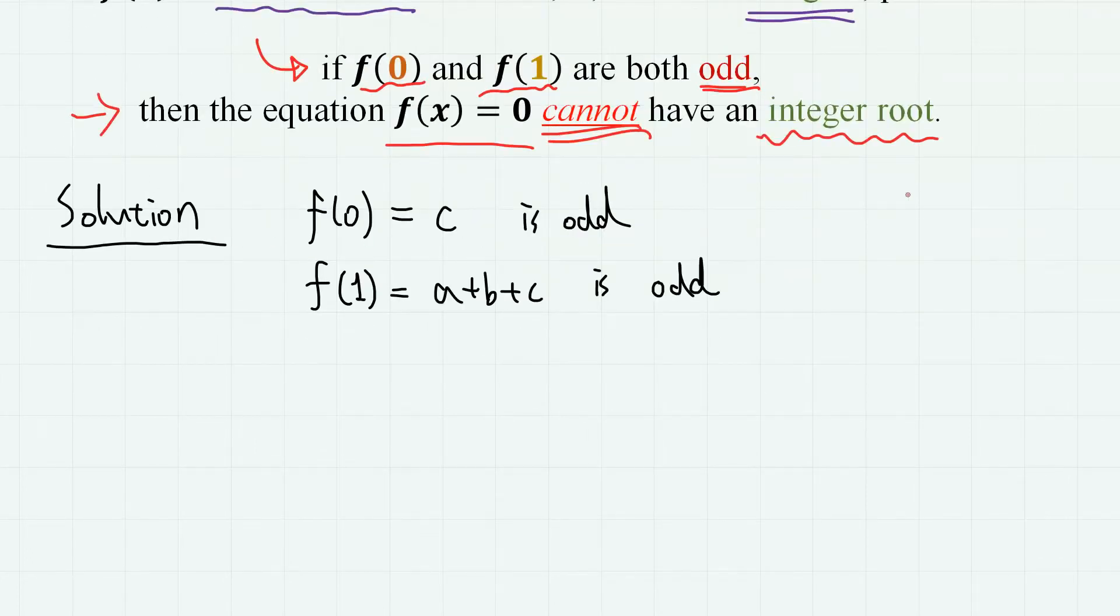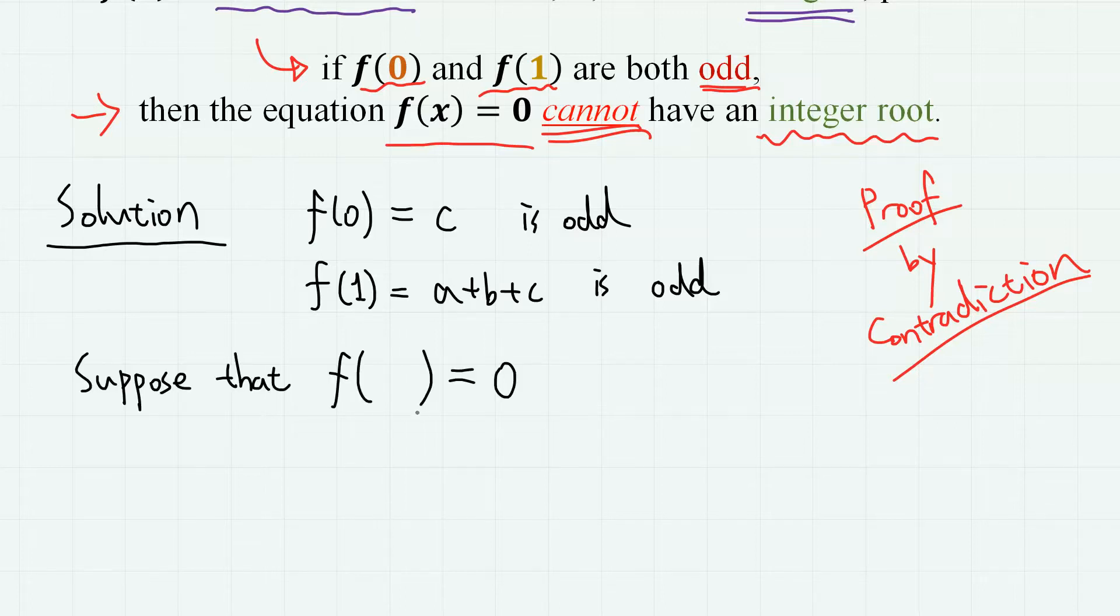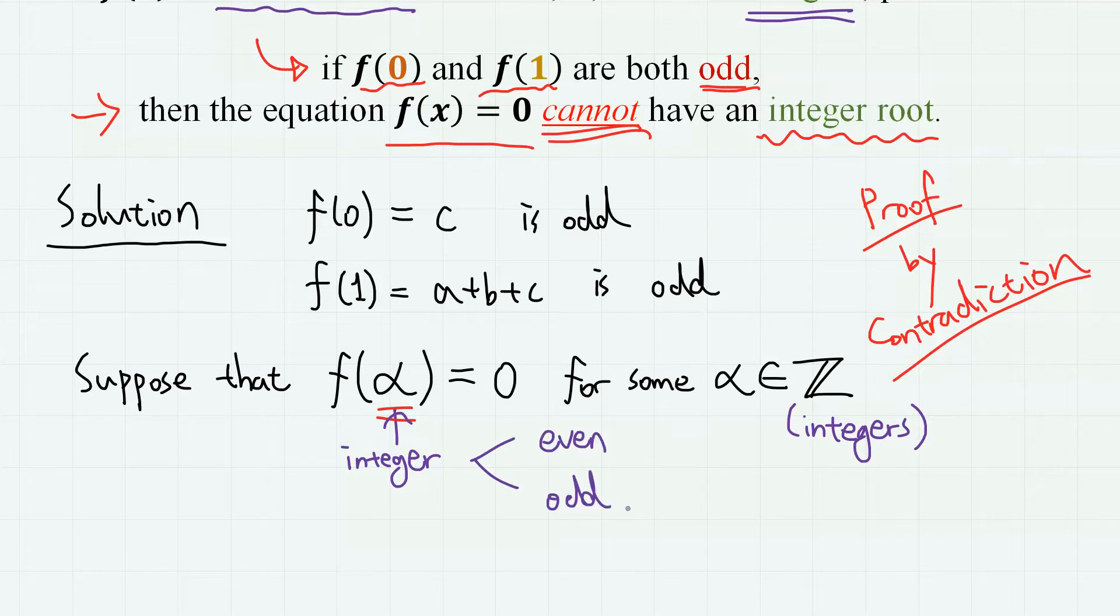Now for this part, we are going to take the famous proof by contradiction approach. Suppose there exists an integer root alpha for the given equation. Then, since this alpha is an integer root, alpha can be either even or odd, so we divide cases like this.